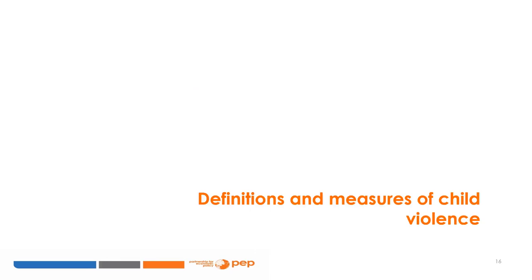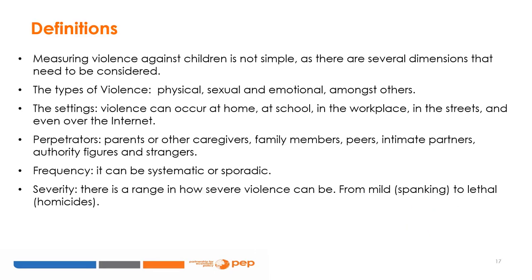We will now explore some formal definitions and measures of violence towards children. Before introducing a definition of violence, it is important to note that it is not easy to measure, and there are several dimensions to consider. First, there are different types of violence, including physical, sexual, and emotional. Second, violence can occur in different settings — at home, in schools, at workplaces, in the streets, and even over the internet.